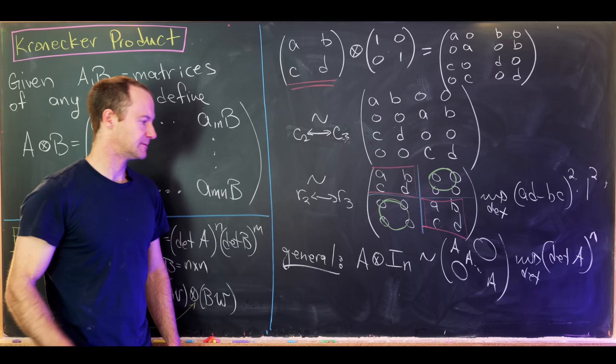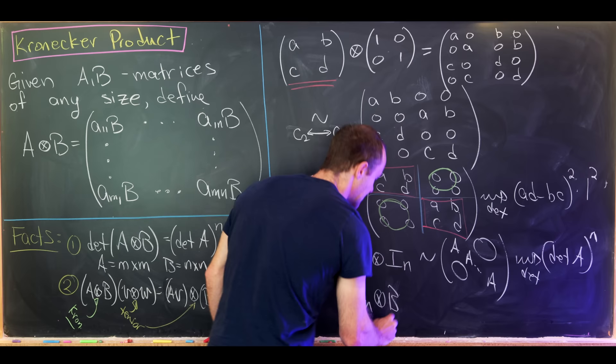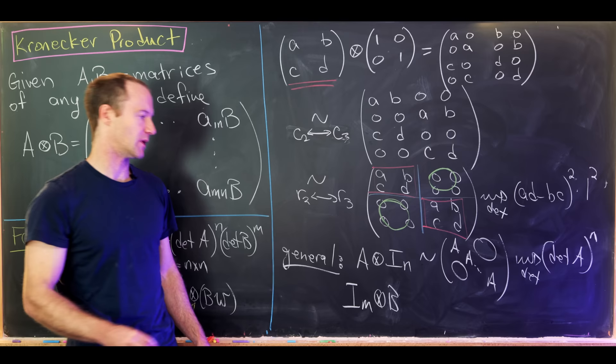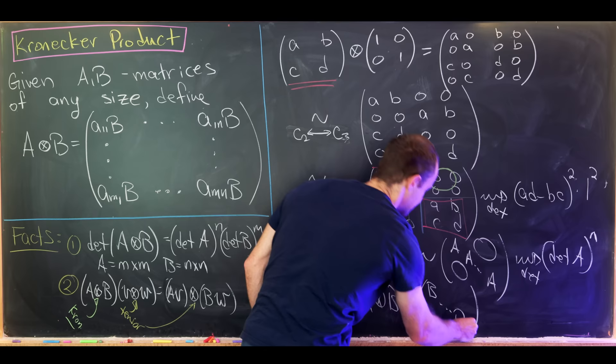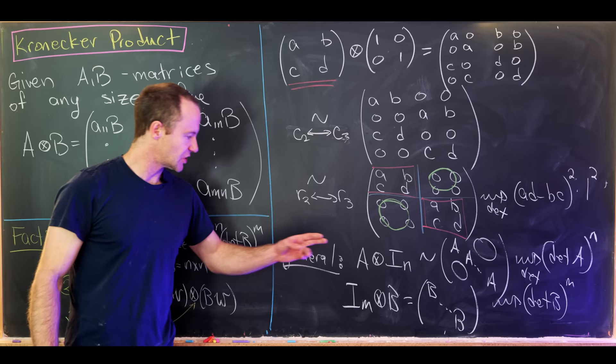Similarly, I_m⊗B is not just row-and-column equivalent to a block diagonal matrix with copies of B — it's actually directly equal to it. So when we take its determinant, we get det(B)^m. These two facts are the key ingredients for proving the main result.